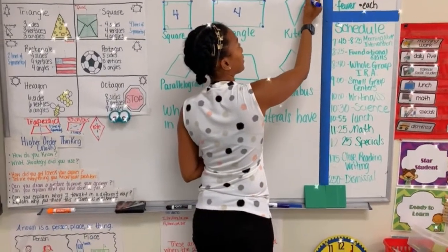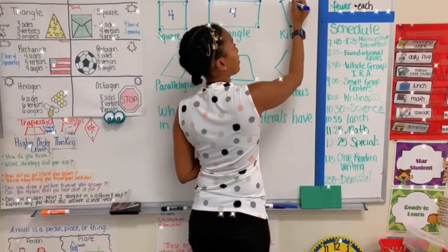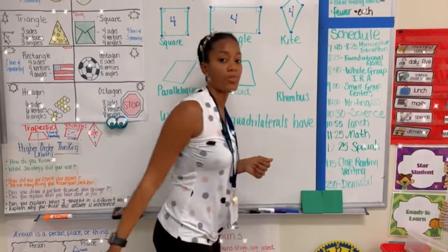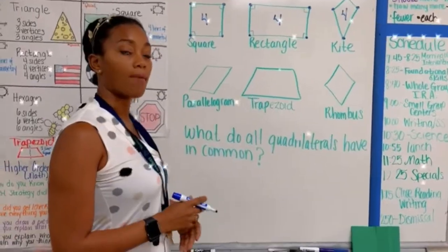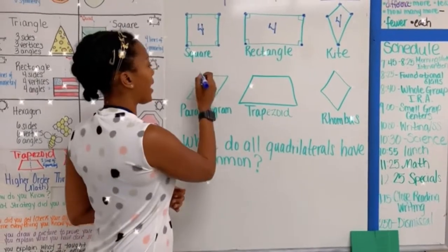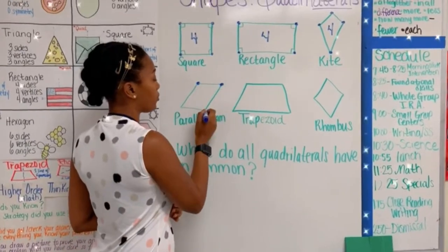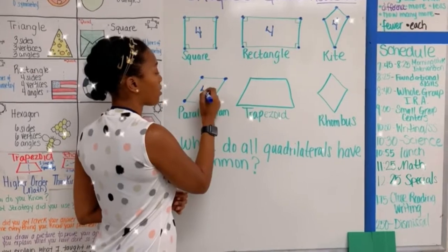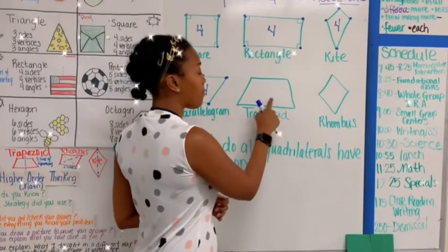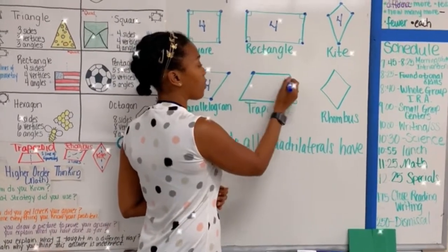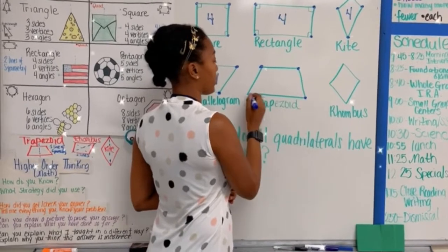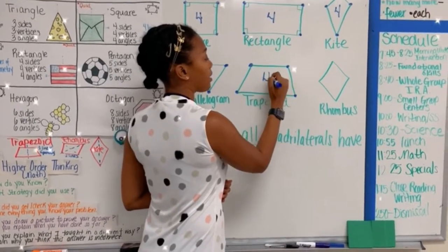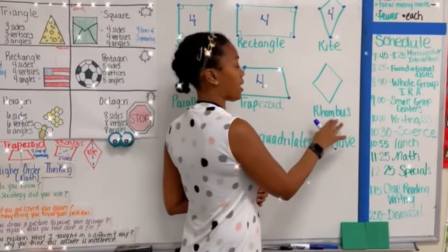In my kite, I have one, two, three, four. There are four vertices within my kite. In my parallelogram, I have one, two, three, four. Four vertices. In my trapezoid, I have one, two, three, four. Again, four vertices.